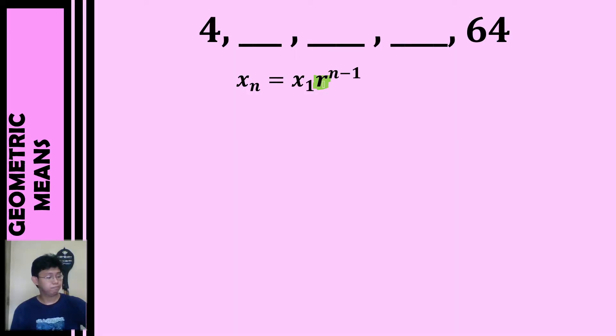Now, let's identify our given. So our first term is 4. Our last term or the fifth term is 64. In our given, we have five terms, so n equals 5. Now that we have this, we can substitute and replace everything by our given.